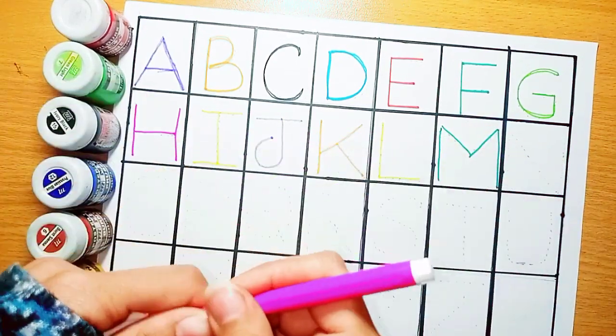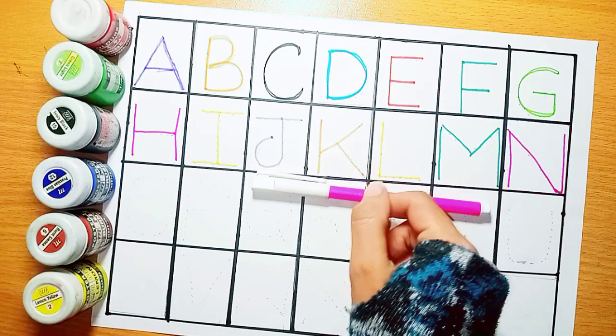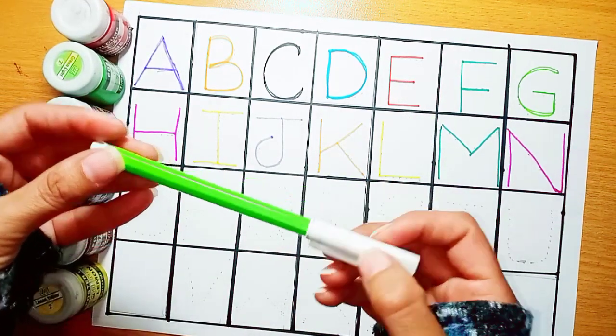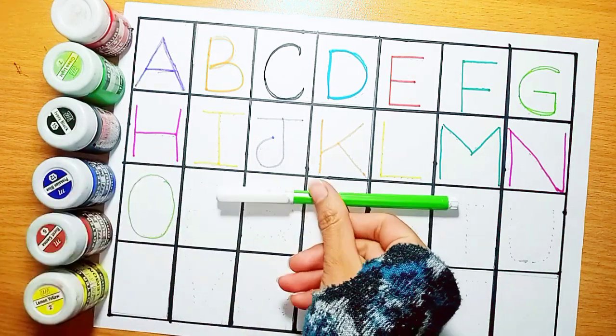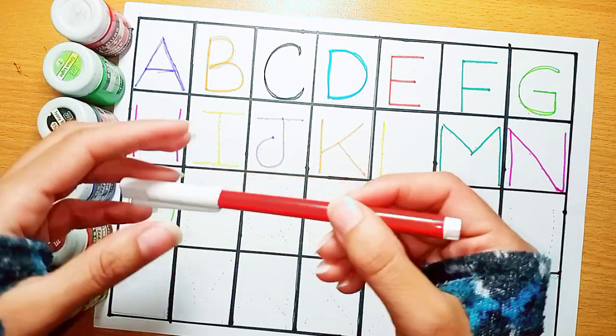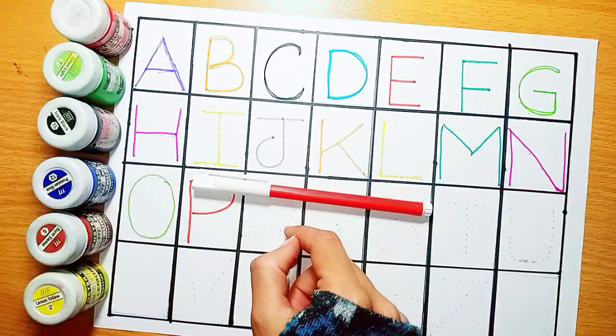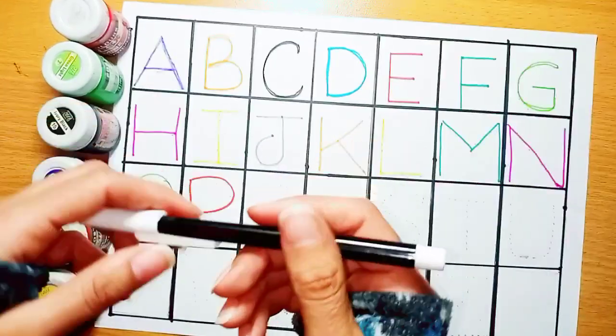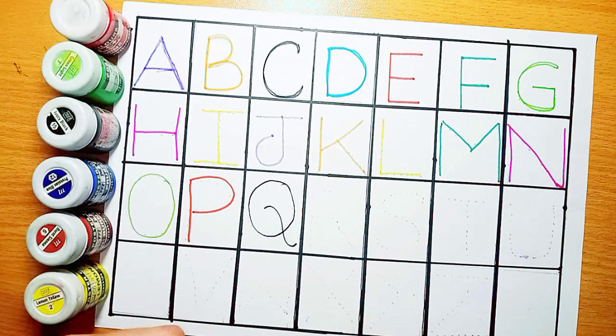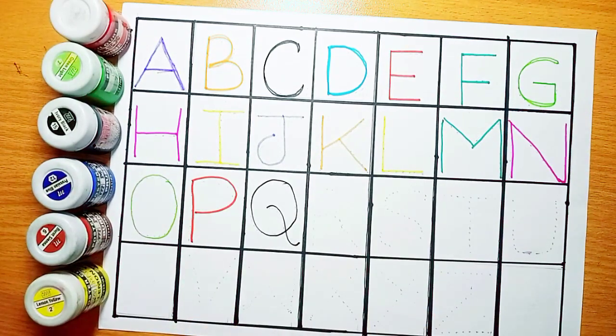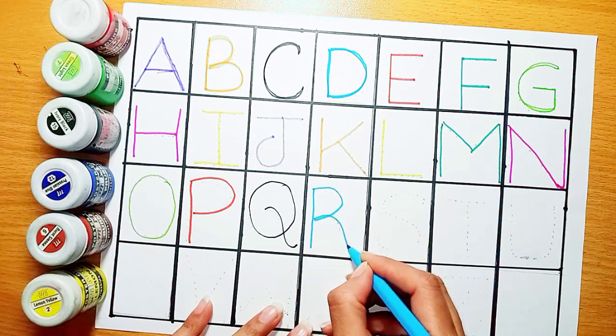Pink color, N, N for Nest. Light green color. O, O for Orange. Red color, P, P for Parrot. Black color, Q, Q for Green. Sky blue color, R. R for Rose.